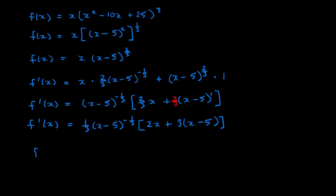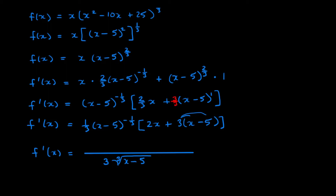Let's rewrite our derivative. We can move the three to the bottom and recognize we're going to have a cube root of x minus 5. On the top we have three times x plus three times x minus 5, which gives three x minus 15, and don't forget the two x, so that's five x minus 15. So there's our first derivative: f prime of x equals five x minus 15 over three times the cube root of x minus 5.